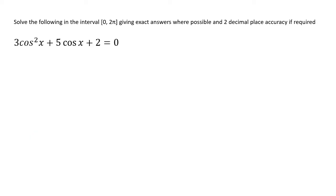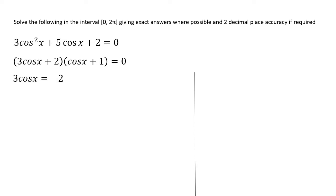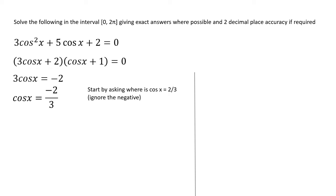Let's try another one. This is a cosine function: 3 cos squared x plus 5 cos x plus 2 equals 0. The approach is the same — we factor it into 3 cos x plus 2 and cos x plus 1, both equal to 0. We're going to ignore the fact that we're taking the cosine to the minus 1 of a negative angle.